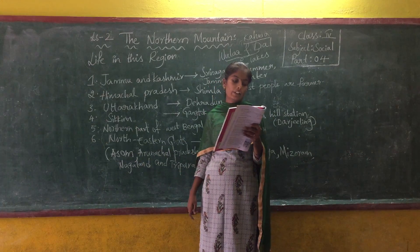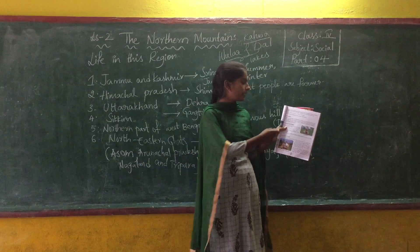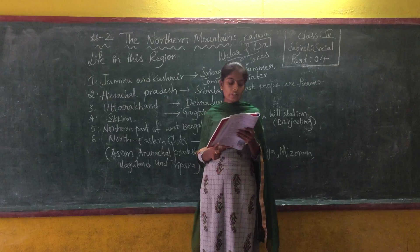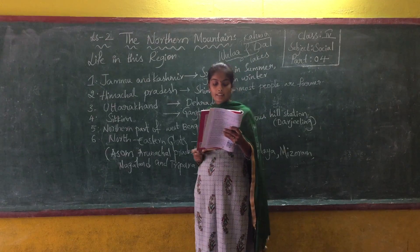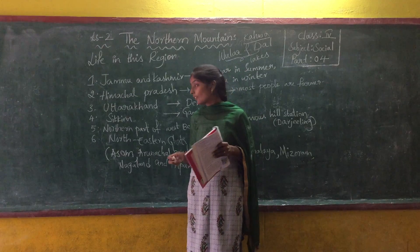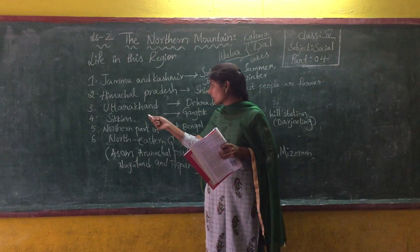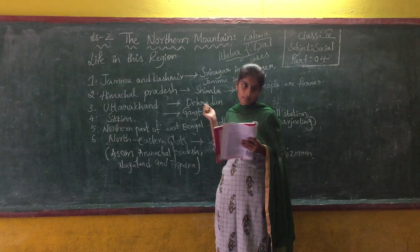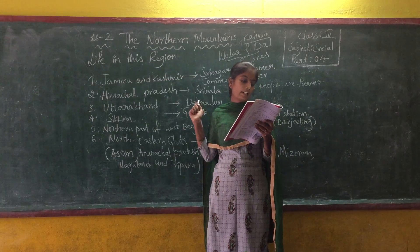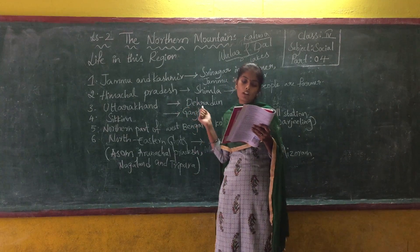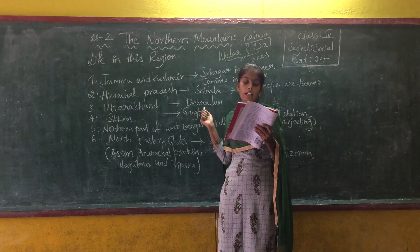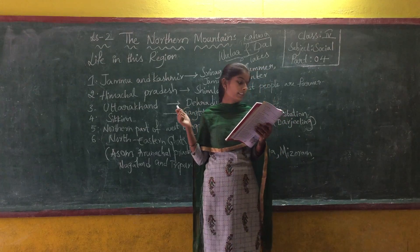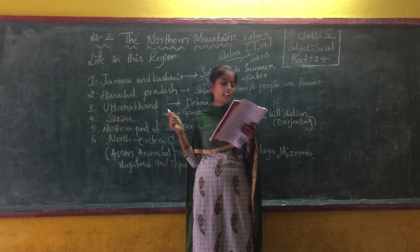If you are looking at page 17 in your textbook, we can see about Uttarakhand. Dehradun is the capital of Uttarakhand. Garhwal and Kumaon hill ranges come under Uttarakhand.